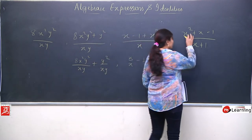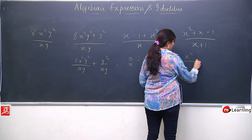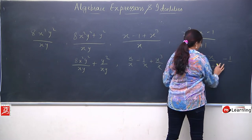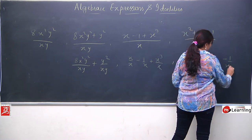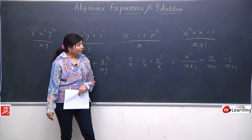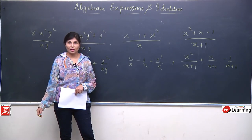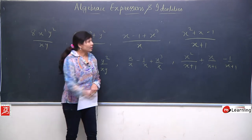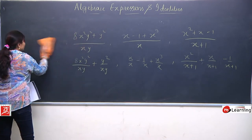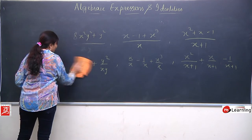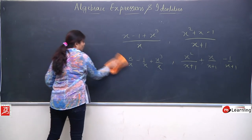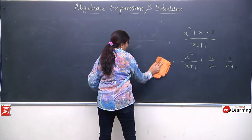Agar aap separate karein — let's say aapne isse separate kar diya: minus 1 upon x, plus 1. But isse ab humein kya faayda milega? Koi faayda nahi milega kyunki separate hone ke baad bhi kuch bhi cancel nahi ho raha hai ya simplify nahi ho raha hai. To aise situation jab humare paas denominator mein binomial, trinomial, ya polynomial ho, tab hum kya karenge — usse pehle main ek baar aapko recall karaaungi ki monomial, binomial, trinomial aur polynomial kya hote hain.